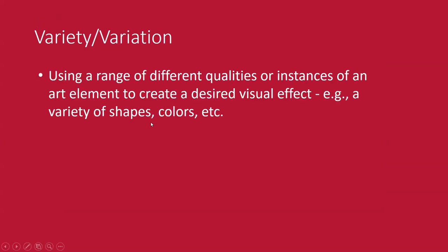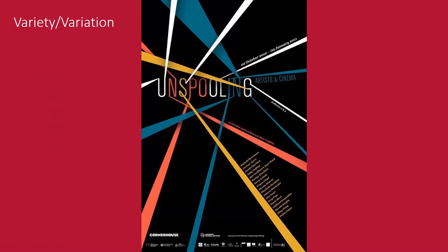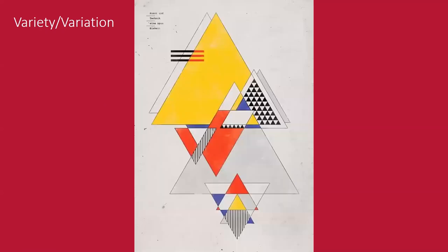Variety and variation is using a range of different qualities or instances of an art element to create a desired visual effect — a variety of shapes, colors, etc. Variety can add interest and break the dullness of simple repetitions. For example, if all the dynamic lines on a poster were the same color it wouldn't be as interesting; changing up color, adding contrast, and varying the direction of lines creates much more interest. Even all-triangle compositions become more interesting when you add different colors and change the direction they're facing.